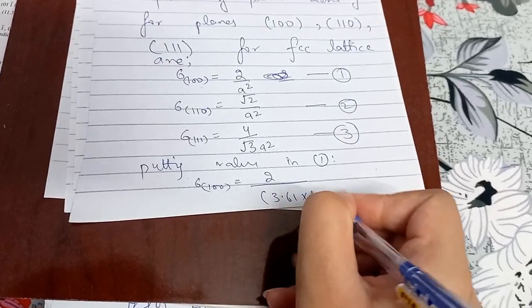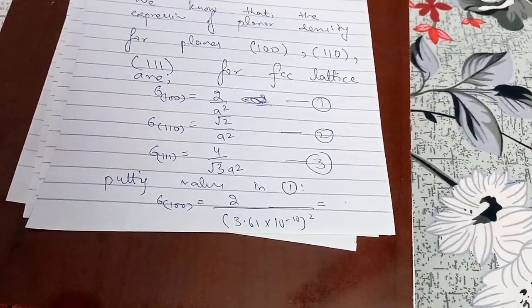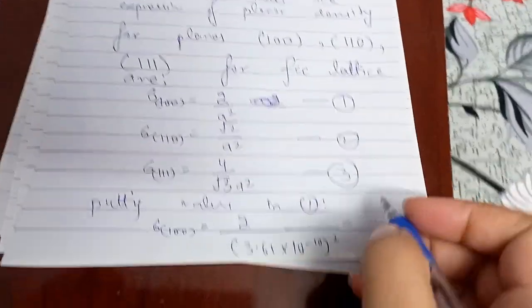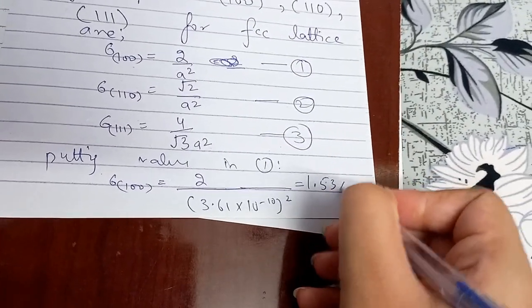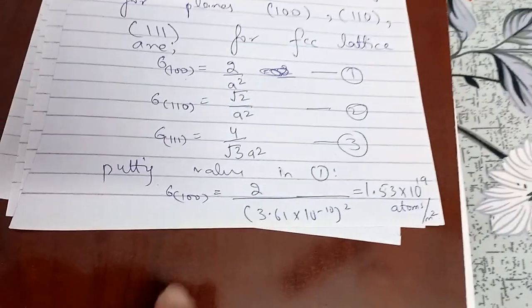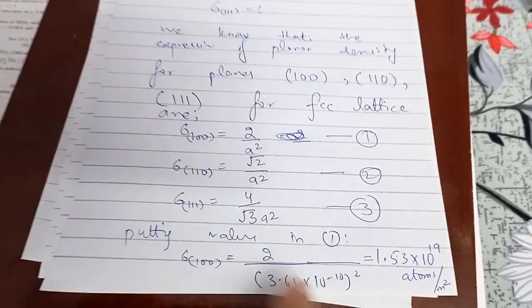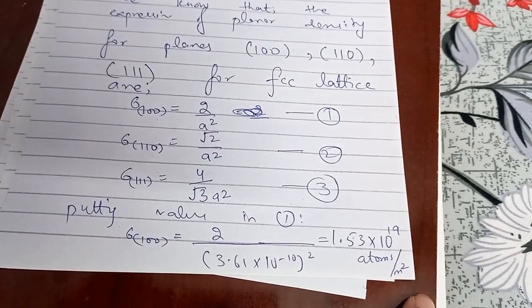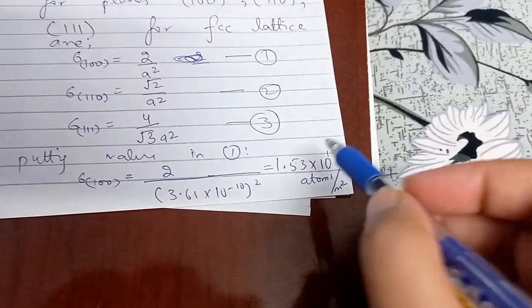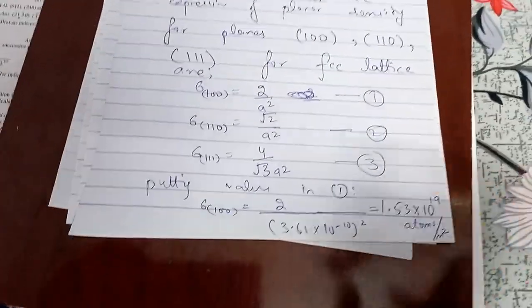Putting values into equation 1 for the (100) plane: σ₁₀₀ = 2 / (3.61 × 10⁻¹⁰)². Using a calculator, the answer is 1.53 × 10¹⁹ atoms/m². The unit is atoms per meter squared because area appears in the denominator. This matches the book answer of 1.53 × 10¹⁹ atoms/m².